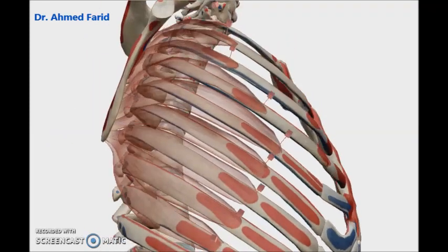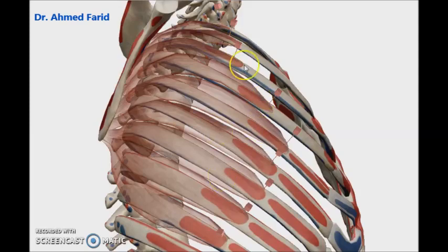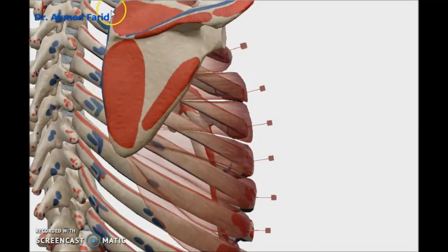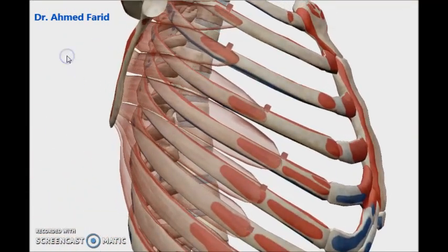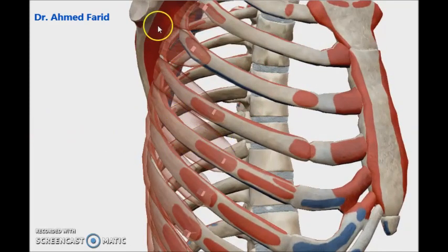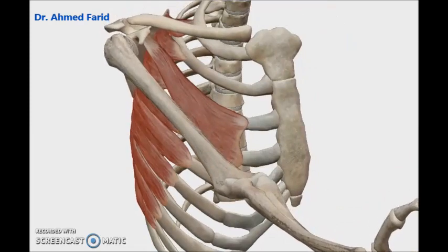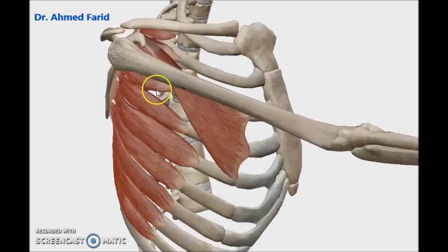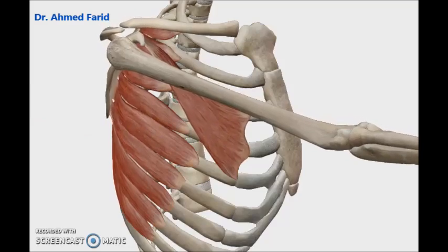In detail: the origin is the upper eight or nine ribs, and the insertion is the medial border of the scapula from its anterior aspect. Applying the rule: this muscle runs from anterior to posterior, attaching the scapula to the front of the axial skeleton, so its main action is protraction of the scapula — with the help of pectoralis minor, serratus anterior is the main protractor of the scapula.